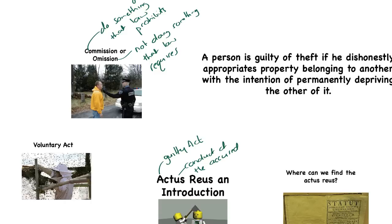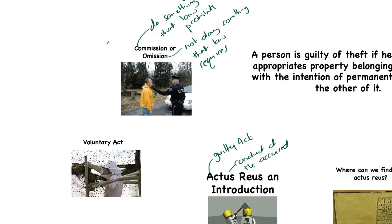This idea of a commission or omission includes the state of affairs or circumstances surrounding the commission of the crime. What were the circumstances? We'll look at the circumstances, the state of affairs of theft when we get to that in a moment. It can also include the result or consequence.